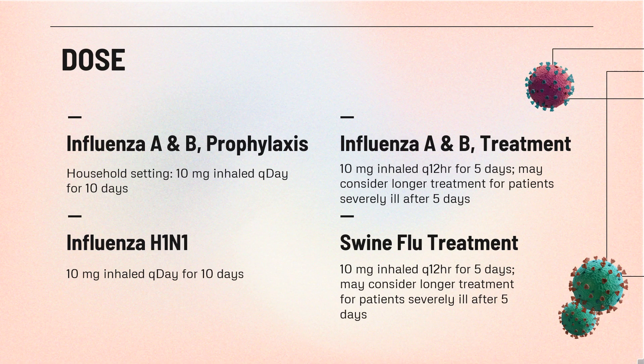Influenza A and B Treatment: Start within 2 days of symptom onset. Administer 2 doses on day 1, at least 2 hours apart. 10 mg inhaled every 12 hours for 5 days. May consider longer treatment for patients severely ill after 5 days.